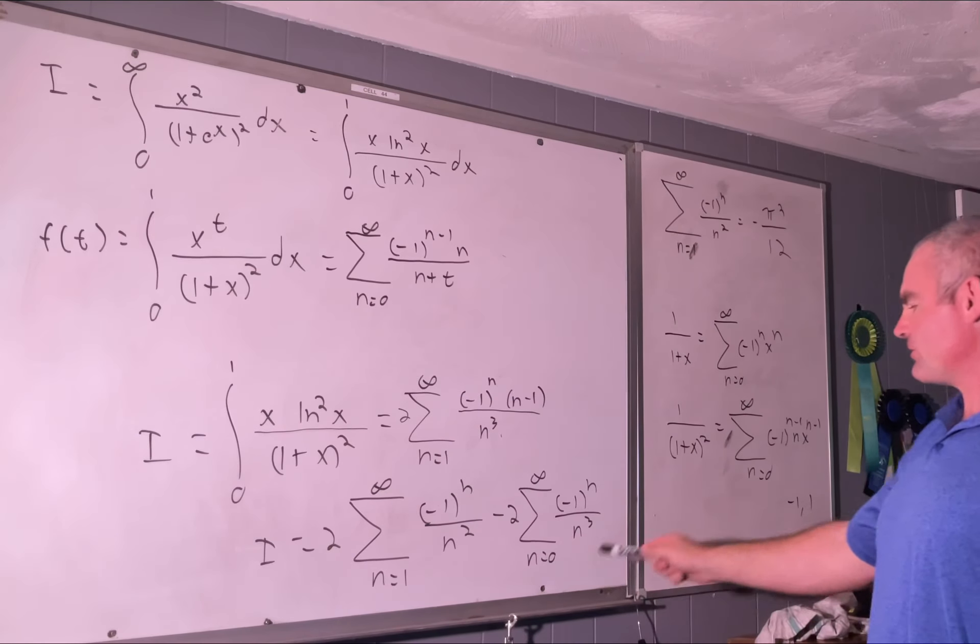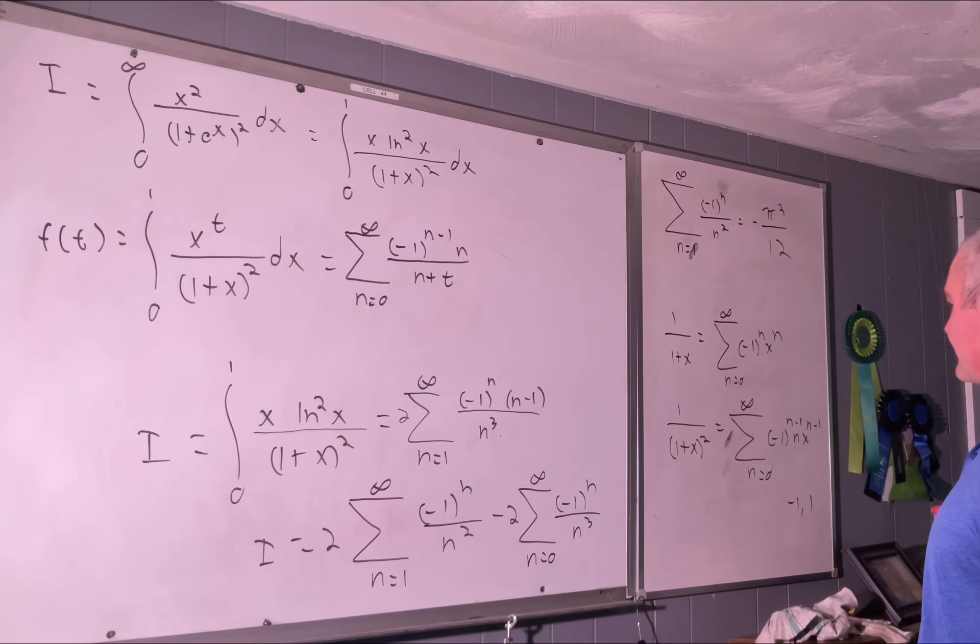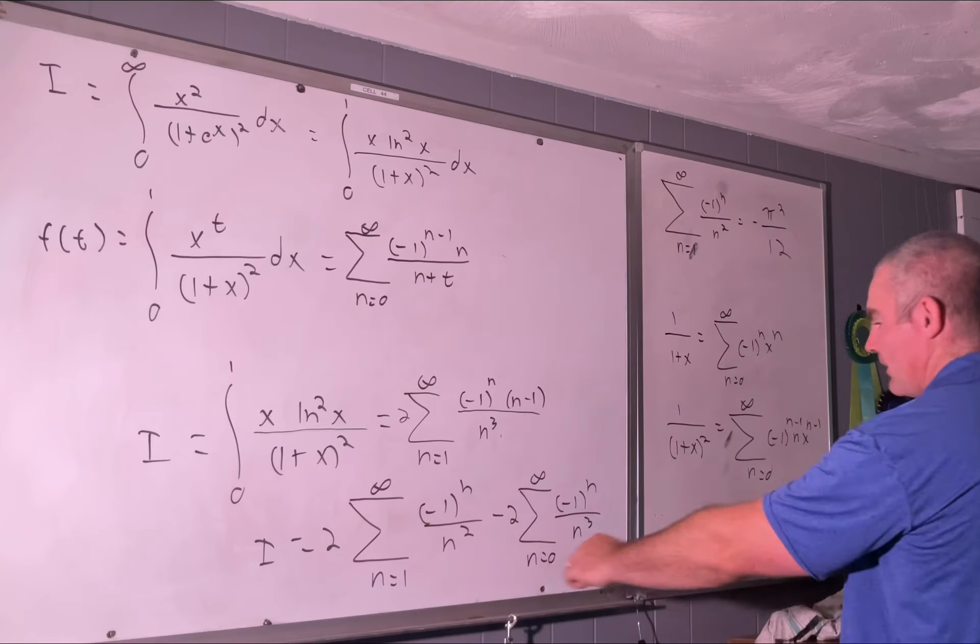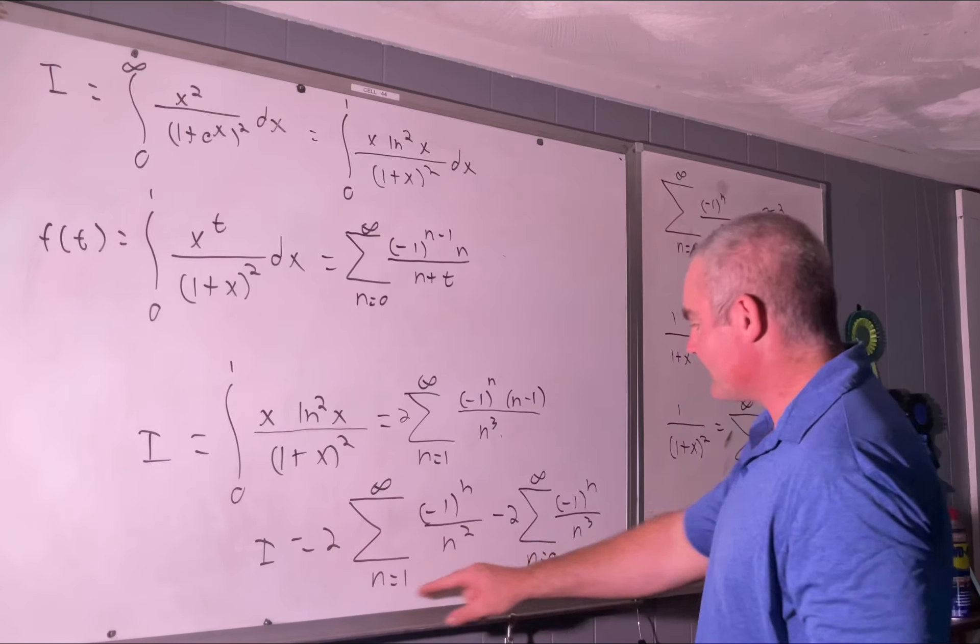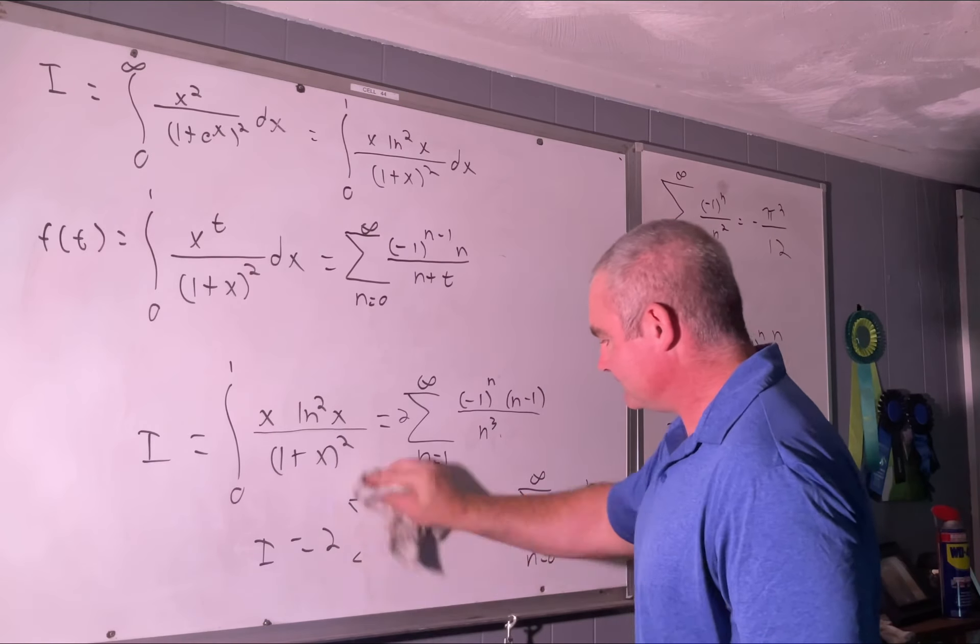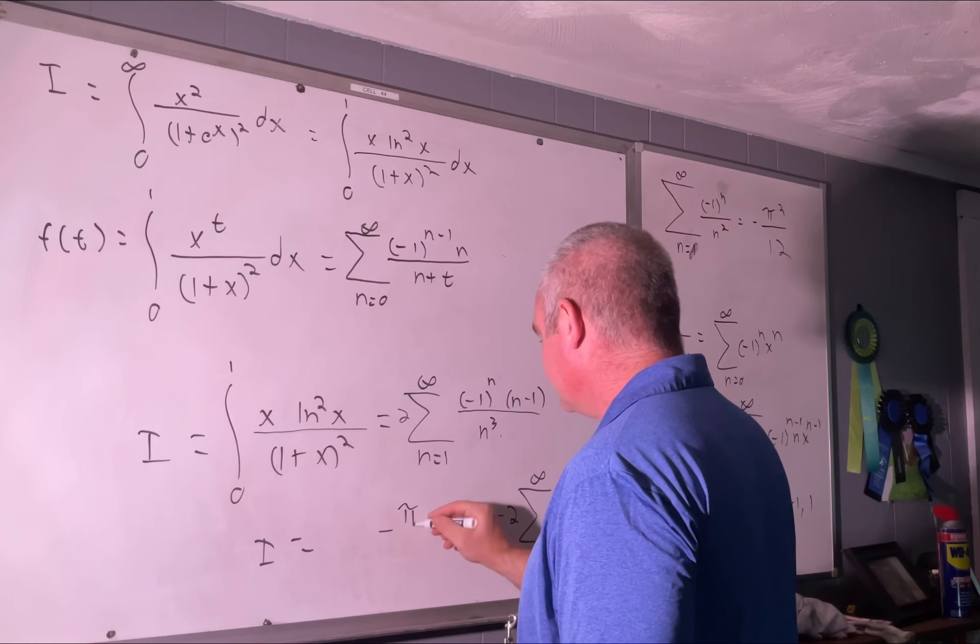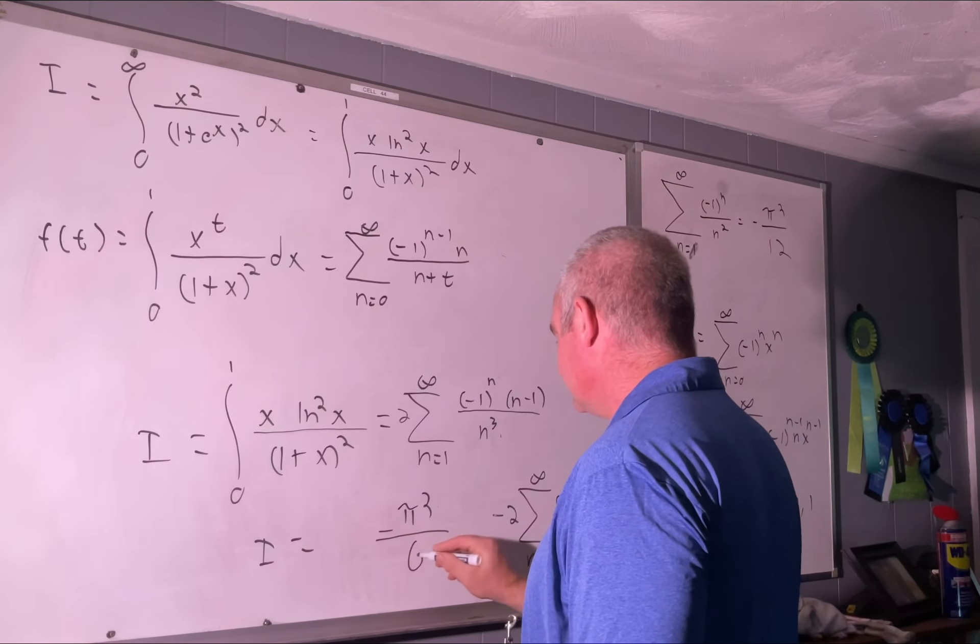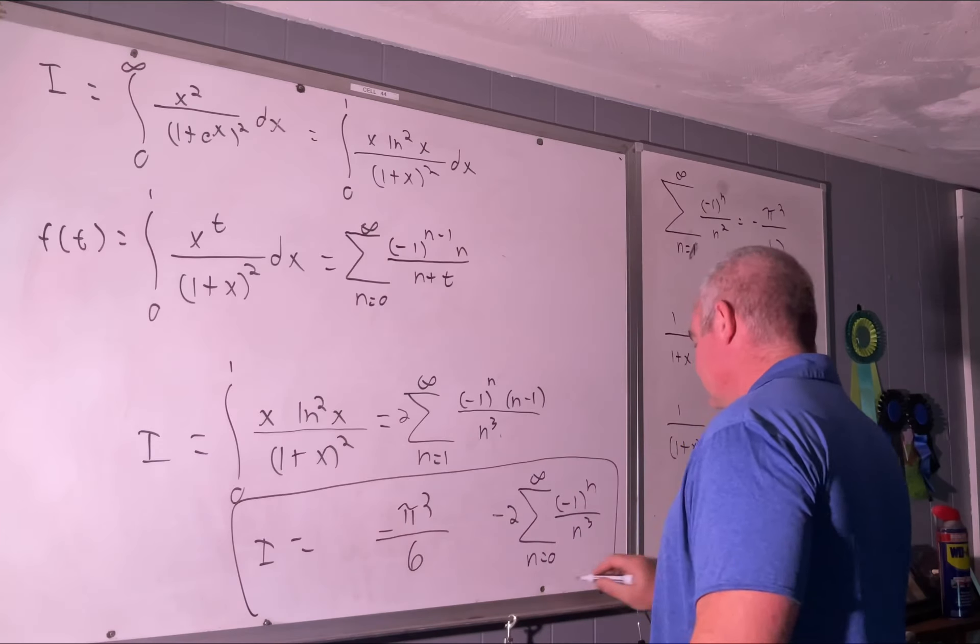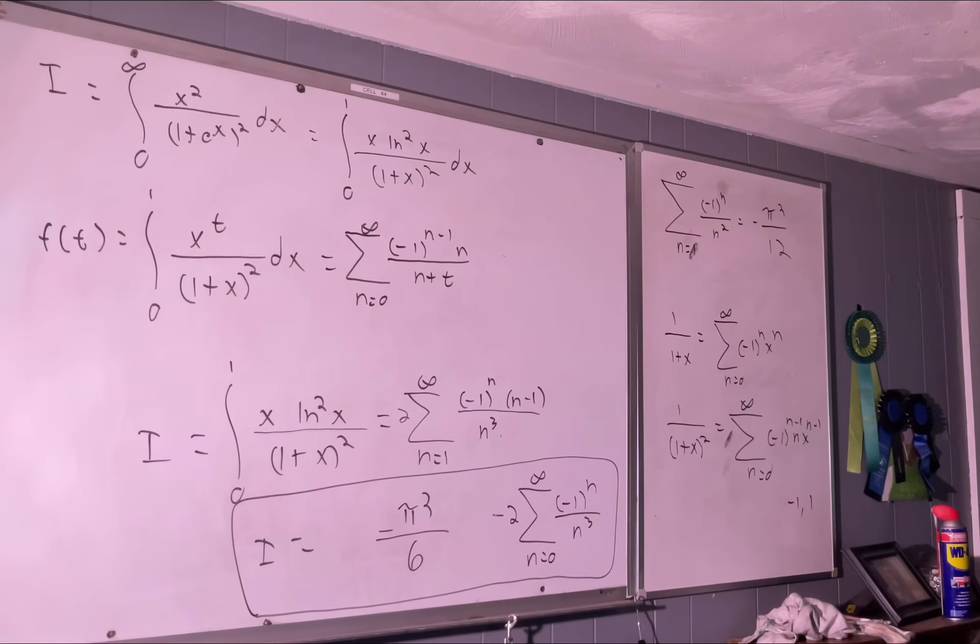I believe there is some sort of special constant involved in this thing right here. I'm not sure exactly what that special constant is called, might be Apéry's constant, I'm not really sure. So we're going to leave this part alone, but this is going to equal negative pi squared over 6. And that's the answer. Hope you enjoyed that!